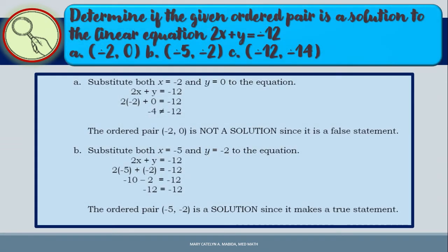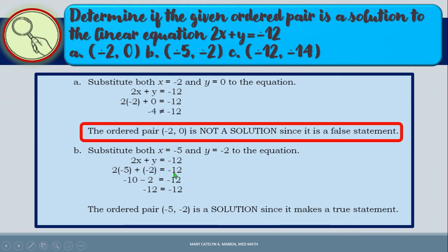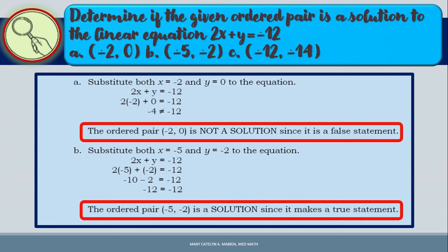Determine if the given ordered pair is a solution to the linear equation 2x plus y equals negative 12. For letter A, substitute x equals negative 2 and y equals 0: 2 times negative 2 is negative 4, plus 0 is negative 4, which is not equal to negative 12. So the ordered pair (negative 2, 0) is not a solution. For letter B, substitute x equals negative 5 and y equals negative 2: negative 10 minus 2 equals negative 12, which is true. So (negative 5, negative 2) is a solution.